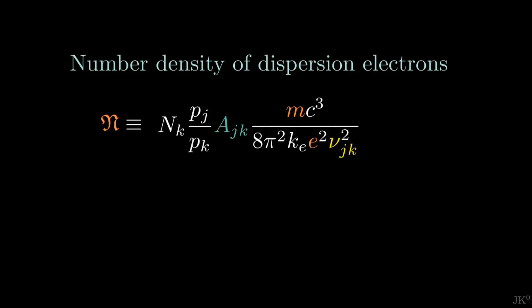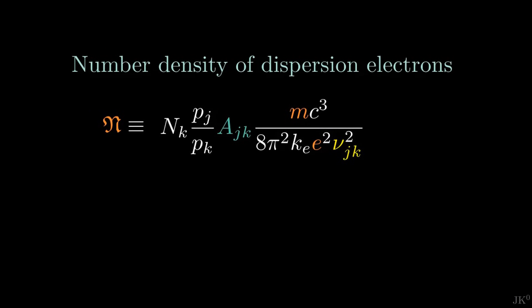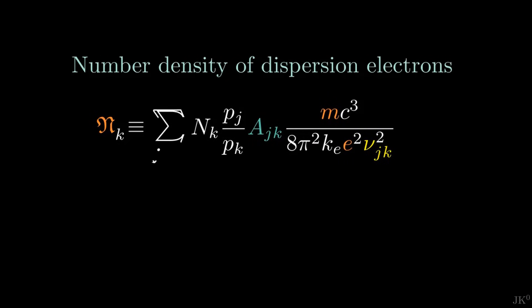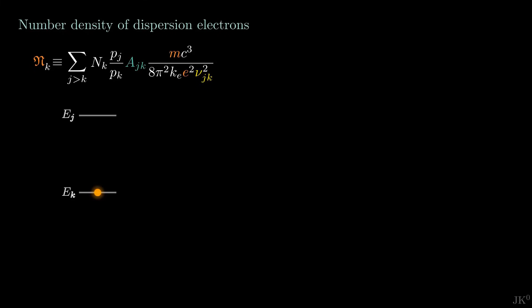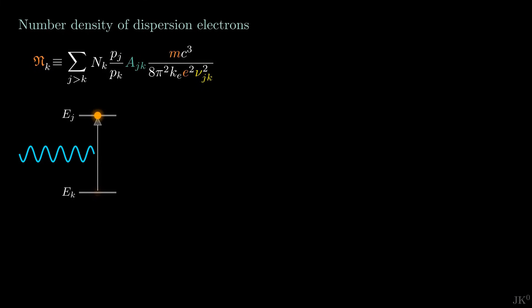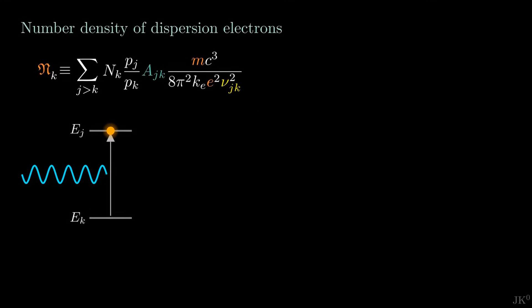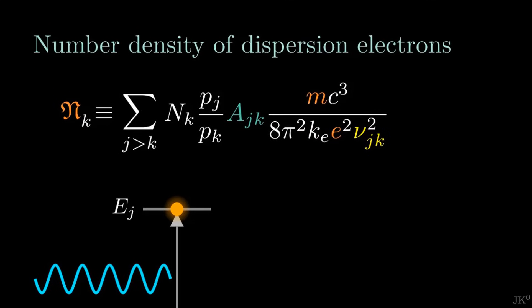The indices on the right-hand side reveal that something is missing in this relation. The index k denotes the state of the atom we are investigating, so the left-hand side should also have this index. The index j denotes a generic state to which the atomic transition takes place after absorbing light. Since j can be any state higher than k, we must sum over j. Think of it as probabilities: light absorption can take place to the state right above k, or two states higher, and so on. The probability of any state k transitioning to j is the sum over all values of j greater than k.